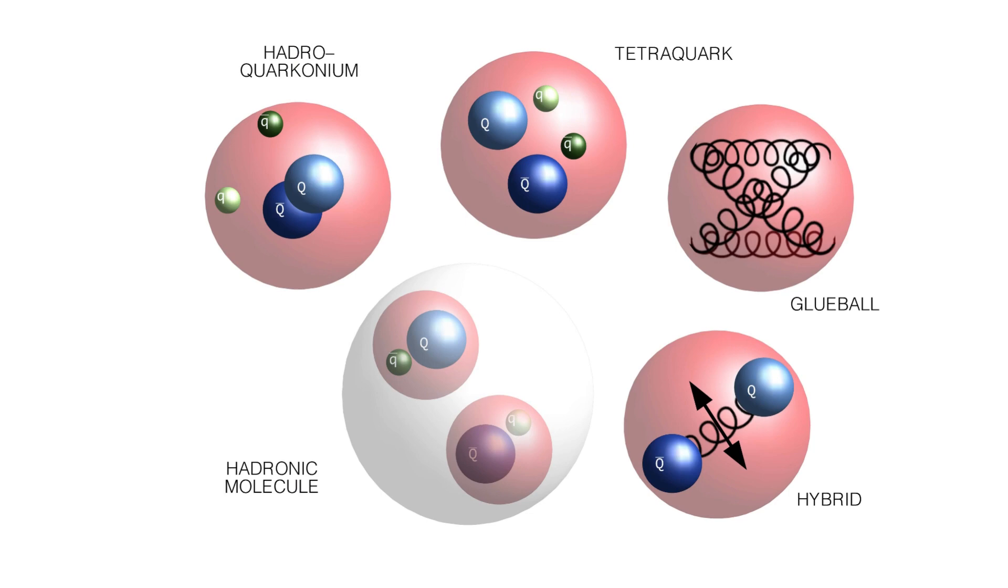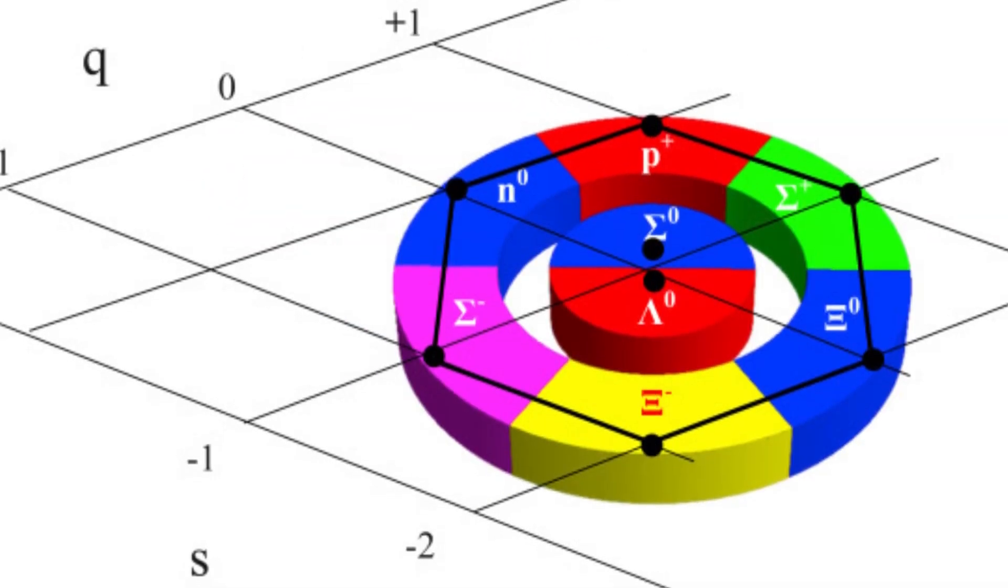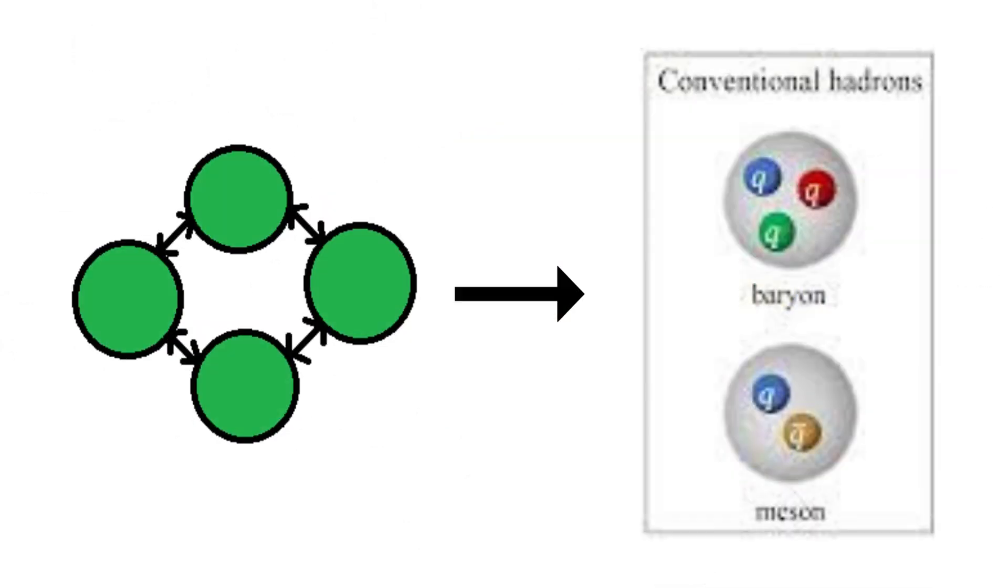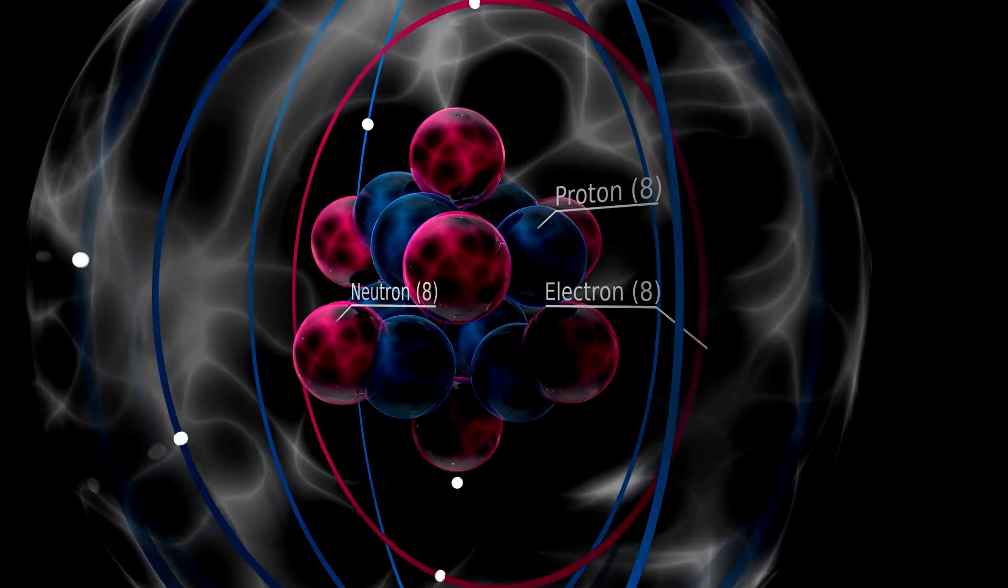Exotic hadrons are represented in certain theoretical models as solitary, strongly bonded quark particles. Others believe they are loosely coupled pairs that make up conventional hadrons, much like the way atoms are coupled to form macromolecules.